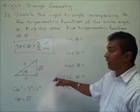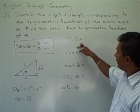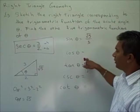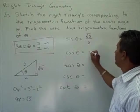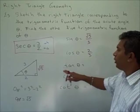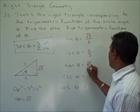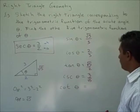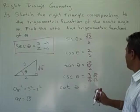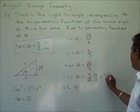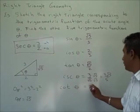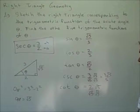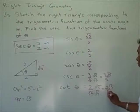Now that we have the length of all three sides, we can find the remaining trig functions. Cosine theta is adjacent over hypotenuse, so this is 2 over 3. Tangent theta is opposite over adjacent, so this is radical 5 over 2. Cosecant theta is the inverse of sine, so this becomes 3 over radical 5; rationalizing the denominator, we multiply by radical 5 to get 3 radical 5 over 5. Cotangent is the inverse of tangent, which is 2 over radical 5; rationalizing gives 2 radical 5 over 5.